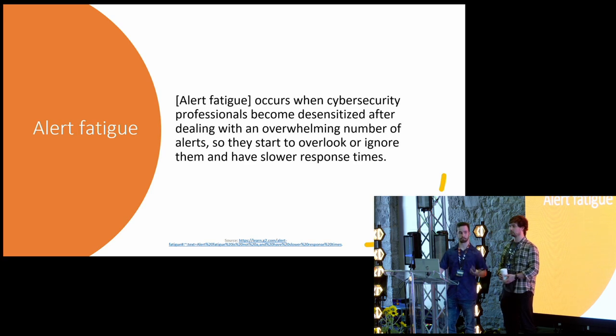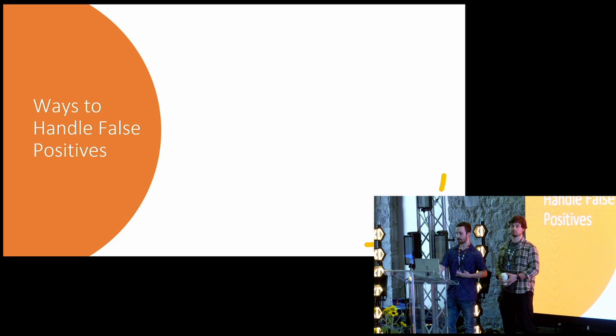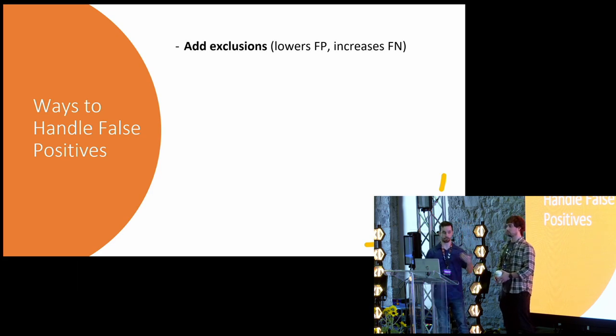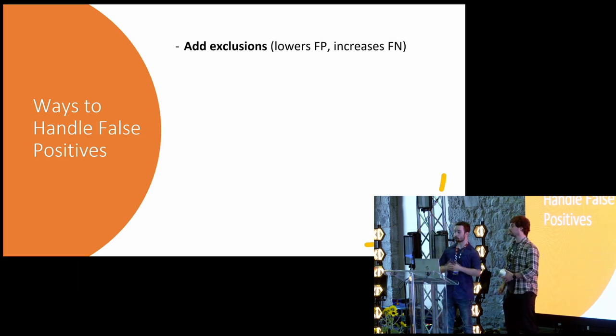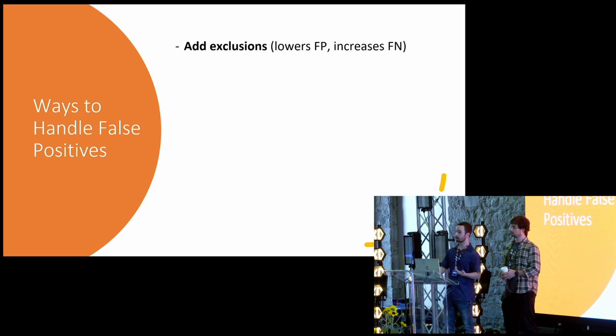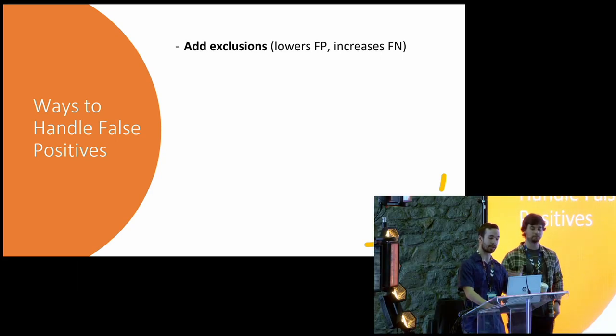So usually we want to address that. And one of the main way to address alert fatigue is reducing the number of false positives. So how can we handle false positives in a SOC? The most obvious answer is add exclusions to your detection. And this is usually good. It lowers the amount of false positives. But the more exclusions you add, the higher the chance that you're gonna miss something that's actually malicious. So meaning increasing the number of false negatives. So you need to be careful.